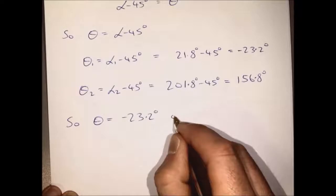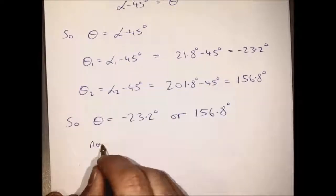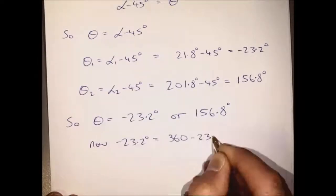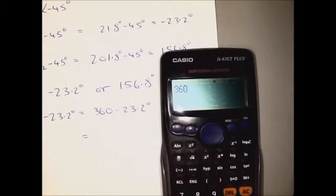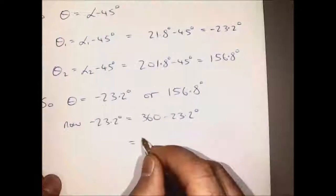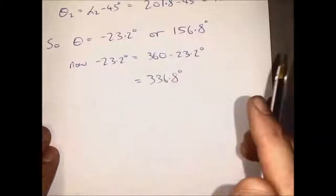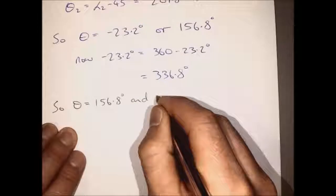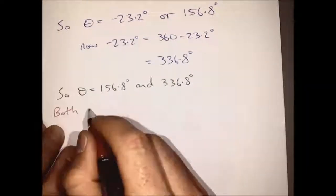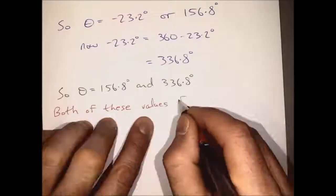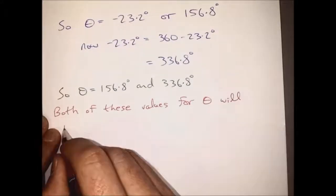So theta equals minus 23.2 or 156.8 degrees. Now we can write minus 23.2 degrees in another way by subtracting it from 360, and that gives the angle in terms of its relation to the positive sense of the x-axis. So our values for theta are 156.8 and 336.8 degrees.